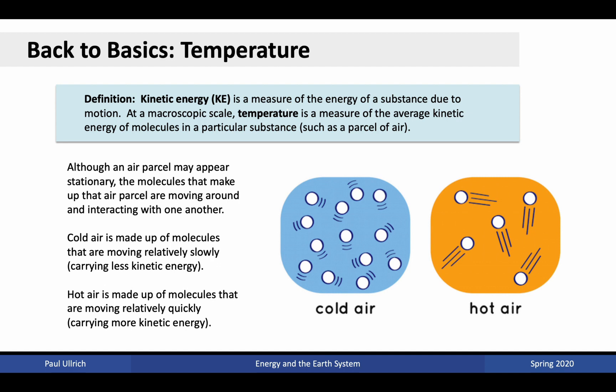Let's go back to basics and start at a very fundamental level. This might remind you of introductory physics. What we refer to as temperature in the atmosphere is a macroscopic property of a particular parcel or fluid object that is actually a measure of the average amount of kinetic energy present within that object. Although an air parcel may appear stationary, such as a balloon floating in air, the molecules within that balloon are bouncing around. In cold air, the typical molecule is moving relatively slowly, whereas in hot air those molecules are moving fairly rapidly.